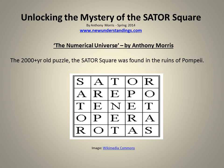The Sator Square, or Rotas Square, is a word square thought to contain a Latin palindrome featuring the words Sator, Arepo, Tenet, Opera, Rotas, in this or in the reverse order, written in a square so that they may be read top to bottom, bottom to top, left to right, and right to left.